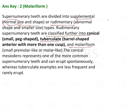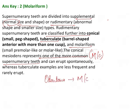The conical mesiodens represents one of the more common supernumerary teeth — actually, it is the most common. Whereas odontome is the most common odontogenic tumor, and it is now considered to be a hamartoma and can erupt spontaneously, whereas tuberculate examples are less frequent and rarely erupt.